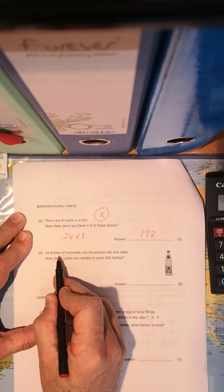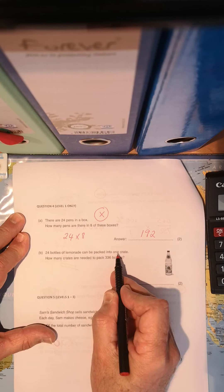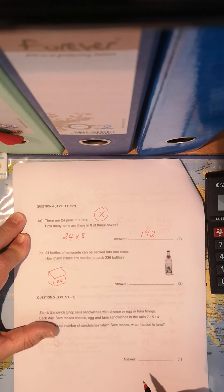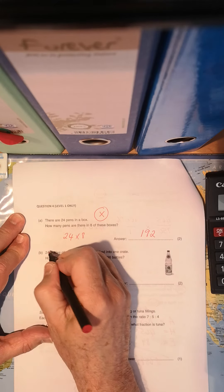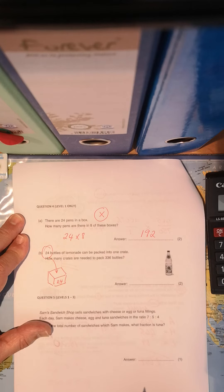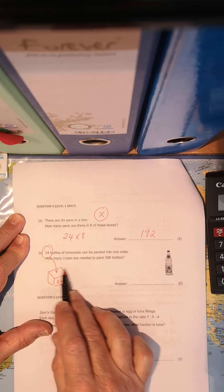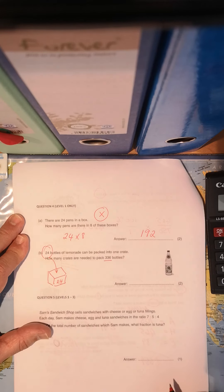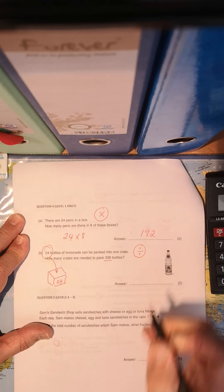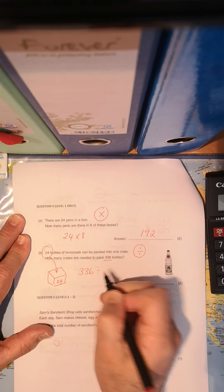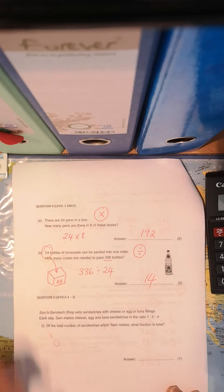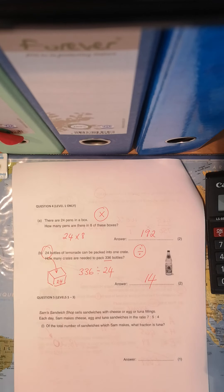Now, 24 bottles of lemonade can be packed into one crate. There we go. One crate holds 24 bottles of lemonade, 24 in that crate. How many crates am I going to need this size to pack 336 bottles? That to my mind is a division sum. So 336 on your calculator divided by 24, and I'm going to need 14 crates to fit those 336 bottles in.